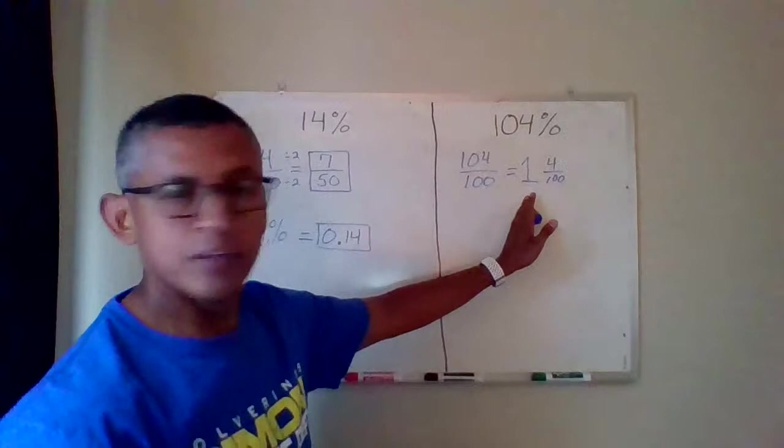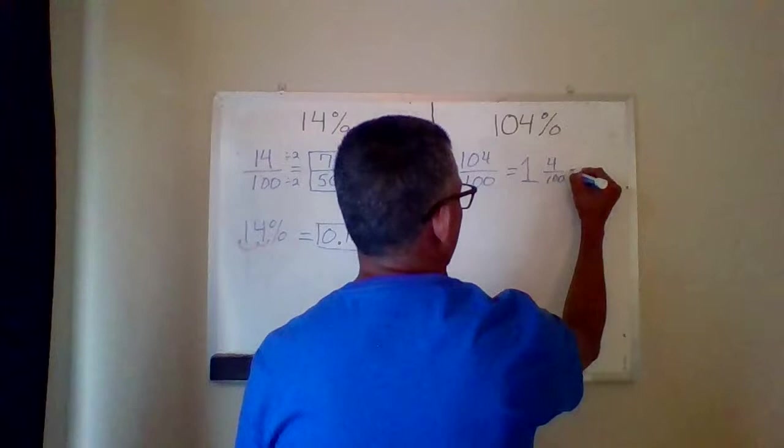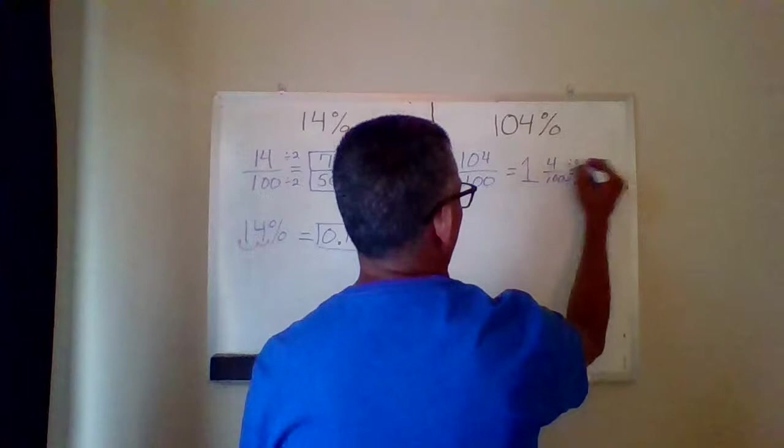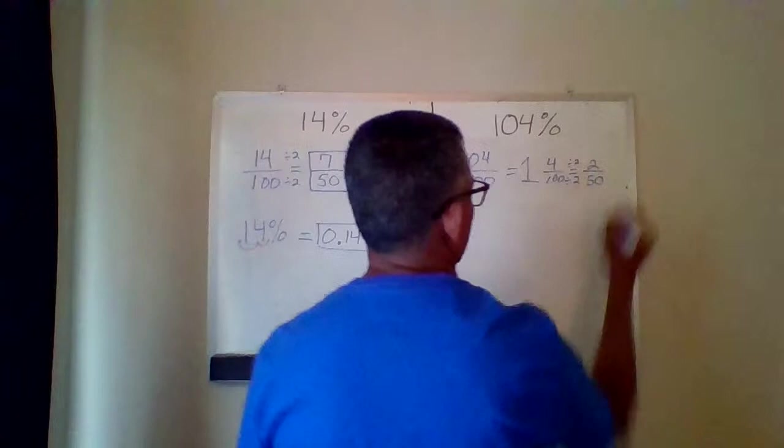Now, the one, the whole number, can be left alone, but I can simplify this four over 100. Both of these can be divided by two. Four divided by two is two. 100 divided by two is 50.